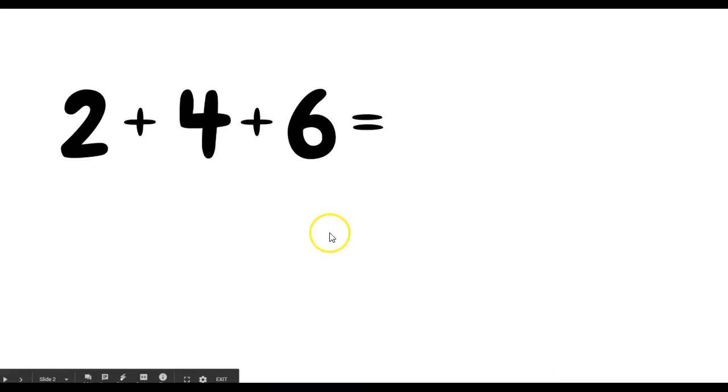Alright, so let's take a look at our very first problem. We have 2 plus 4 plus 6, so we have three addends. Now there's no one exact way that you have to solve this, and that's very important for you to understand.